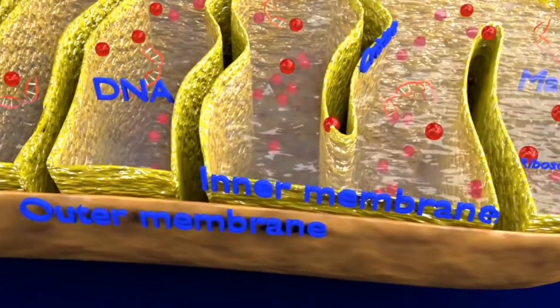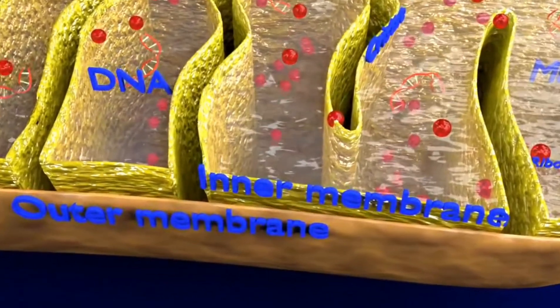The inner membrane contains a variety of enzymes. It contains ATP synthase which generates ATP in the matrix and transport proteins that regulate the movement of metabolites into and out of the matrix.